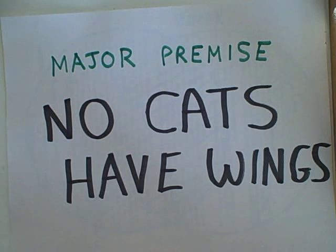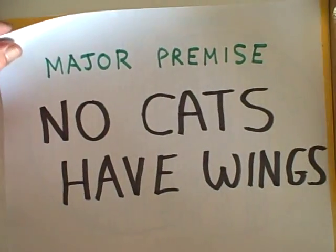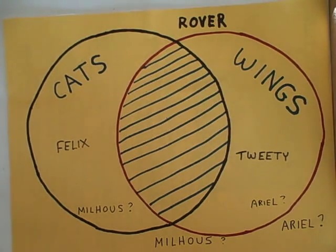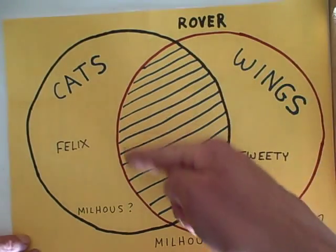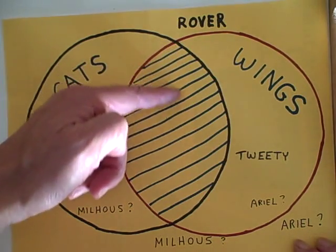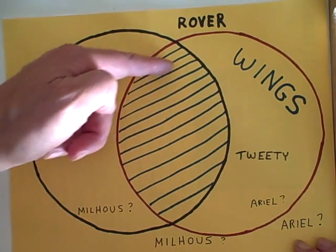Let's take a look at how we might use these diagrams with 'no' statements, such as 'no cats have wings.' We would draw a Venn diagram to represent the major premise — two big circles. Here is our subject, cats. Here is our predicate, wings. This time we shade in the area of overlap between the circles, since there are no cats with wings.